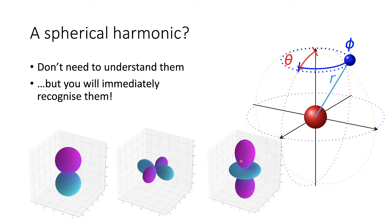Examples of spherical harmonics are shown here, and you'll immediately recognize these as shapes of atomic orbitals. Spherical harmonics predict the shapes of orbitals — they describe how a wave moves across the surface of a sphere. At fixed radius, these describe how a sphere deforms to carry that wave around it. Because of the standing wave nature of these harmonics, it allows us to find the solutions to the Schrödinger equation, which predict where we can find electrons at a given potential term.